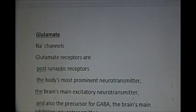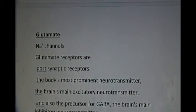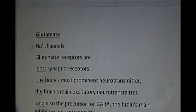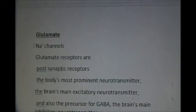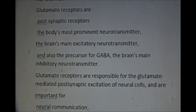Glutamate is the neurotransmitter. Glutamate is the body's most prominent neurotransmitter and the brain's main excitatory neurotransmitter. Glutamate receptors are found at post-synaptic sites. An excitatory neurotransmitter is one which opens sodium channels, so sodium influx into the cell occurs causing depolarization of the neuron. Normally the cell is in a polarized state with positive outside and negative inside. Other neurotransmitters include acetylcholine and dopamine.